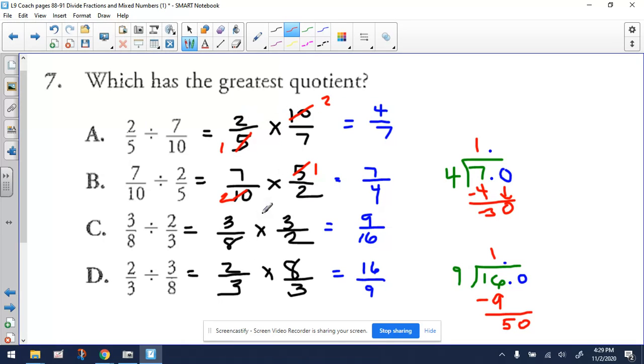So if we take advantage of all the pre-reducing opportunities here you're gonna get the 4 over 7. 7 times 1 here gives you the 7 over 4. 3 times 3 is 9, 8 times 2 is 16. 2 times 8 is 16, 3 times 3 is 9.